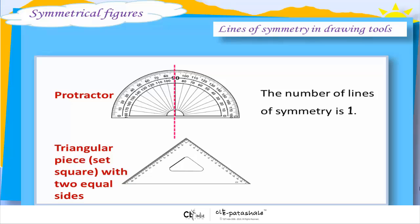Triangular piece Set Square with 2 equal sides. The number of lines of symmetry is 1.